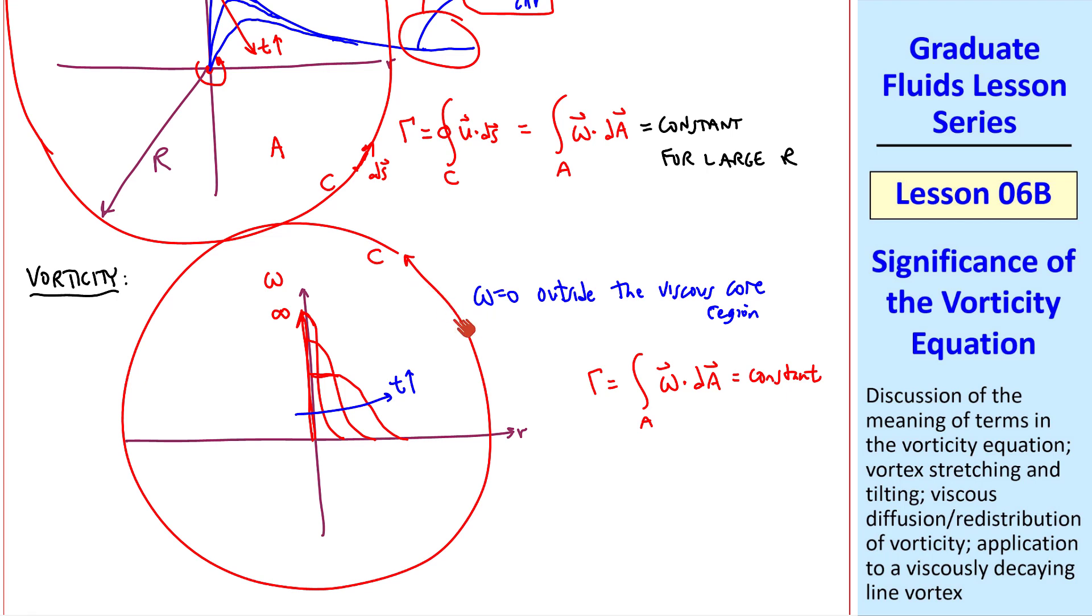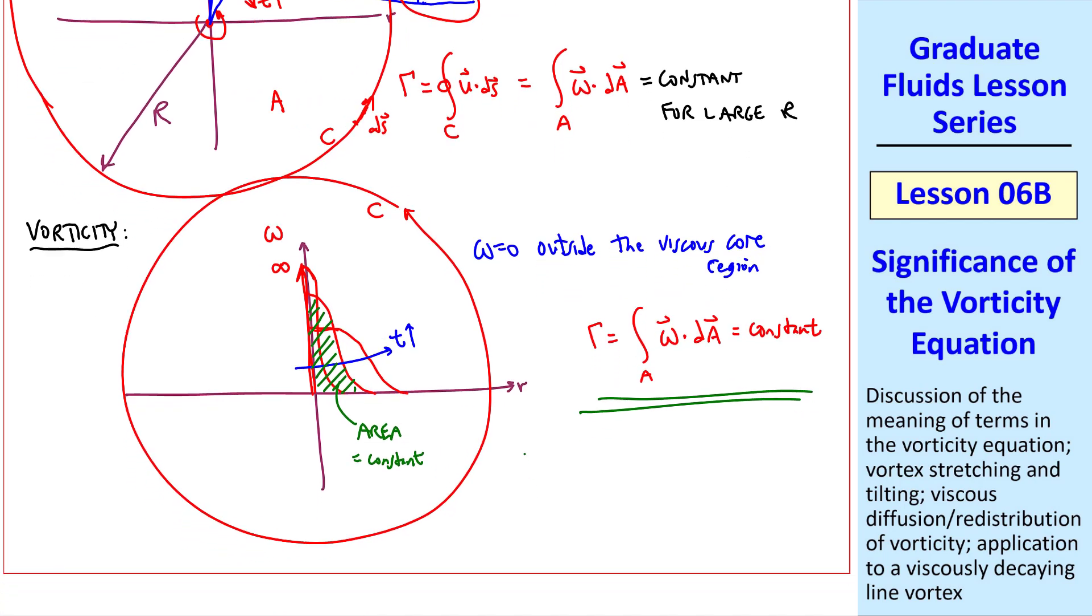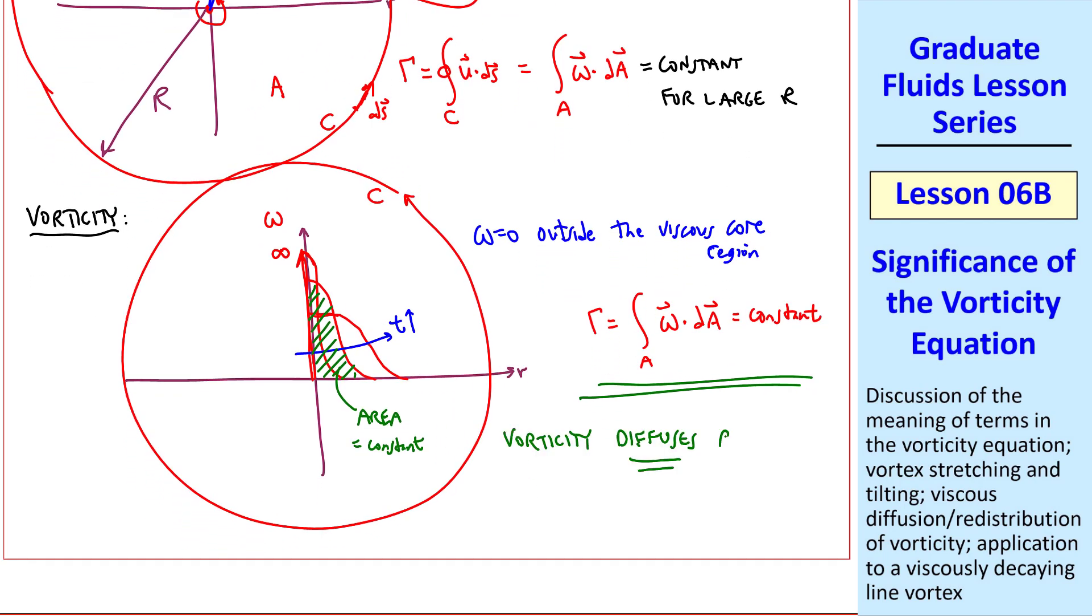Well, since omega is 0 everywhere except in this viscous core, at some time, the area within the vortex profile must remain constant in order for gamma to remain constant. Physically, vorticity diffuses radially. So the viscous term represents a redistribution of vorticity as it diffuses outward.